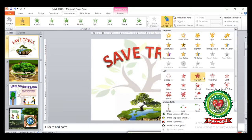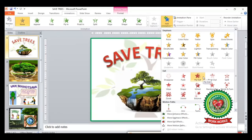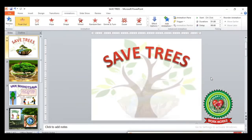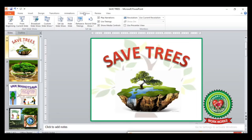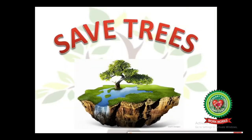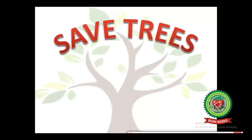The next category is Exit. You can see how your objects are exiting from the slide. Let's apply the Fly Out effect — after clicking on Fly Out you can see the effect has been applied on your slide. Let's see it in Slideshow view. Click on the Slideshow tab, go to From Beginning. You can see after clicking the mouse button your slide effect has been applied on your object.